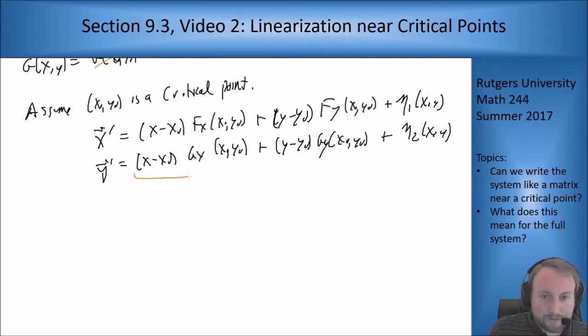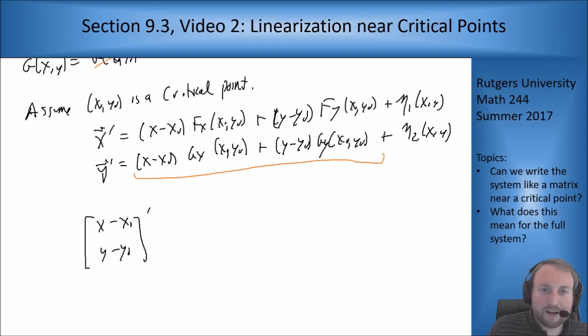If I stack this into a vector let's see what happens. I'm going to change this a little bit to make things match on both sides. This looks like [x-x₀, y-y₀]' because x₀ and y₀ are both numbers, both constants, so they go away when you take derivatives.